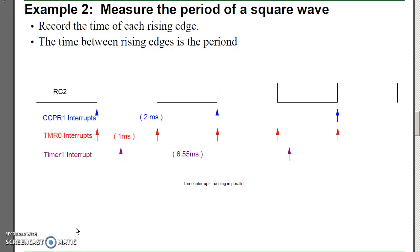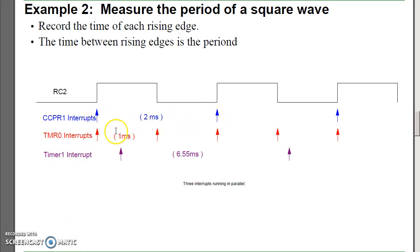I can measure the period of a square wave. I can use capture interrupts to record the time of a rising edge and the previous rising edge. The difference between the two is the period.